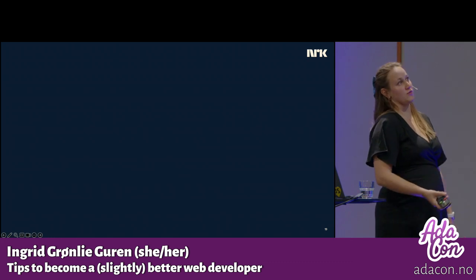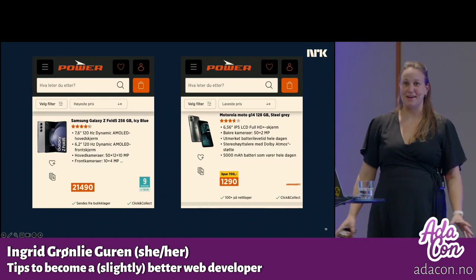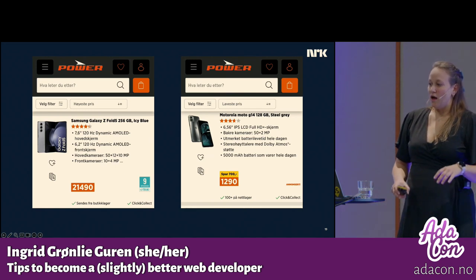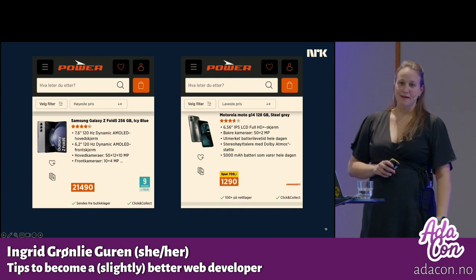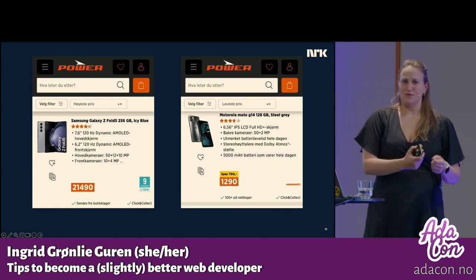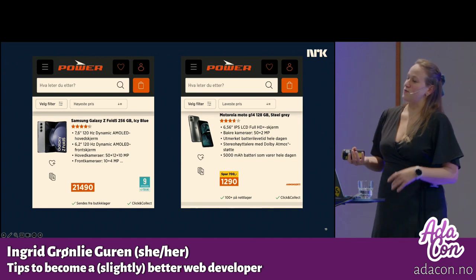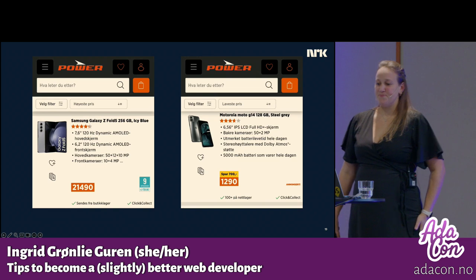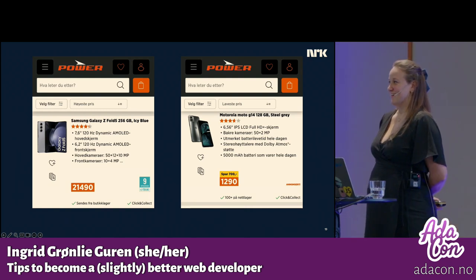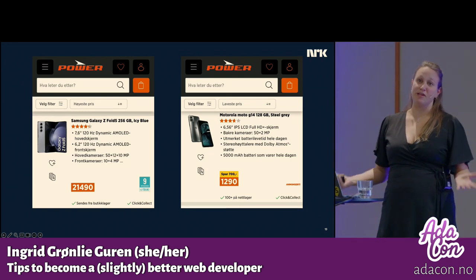So people use their phones to browse the internet — what does that really mean? I went to Power and checked what's the cheapest and most expensive phone right now. I found these two — both Android, both on sale — about 20,000 Norwegian kroners in price difference. How do you think your website performs on one device compared to the other? I kind of hope it's better on the one to the left, because I hope you get more than just being able to fold your phone for 20,000. Where on the smartphone scale do we developers usually sit — do we have fancier phones than the average person? I think so. How many here have a phone that is more than three years old? Five years? Very few. And you might be thinking this doesn't apply to me because I'm a web developer — I work in the browser.